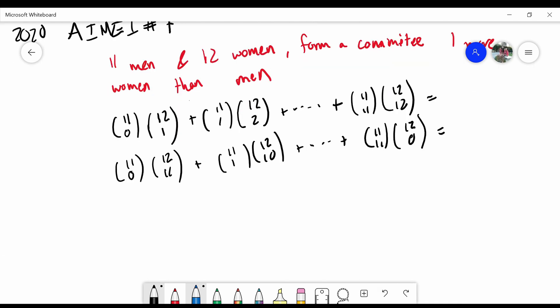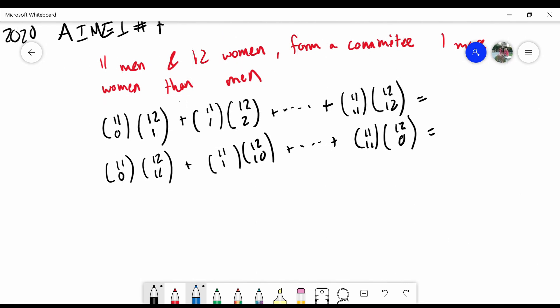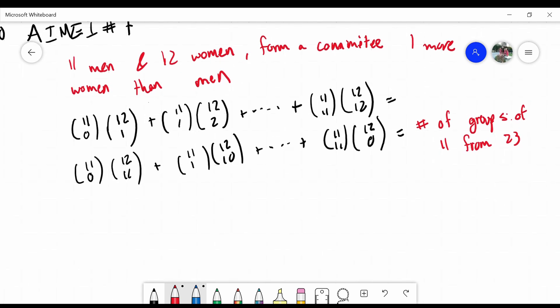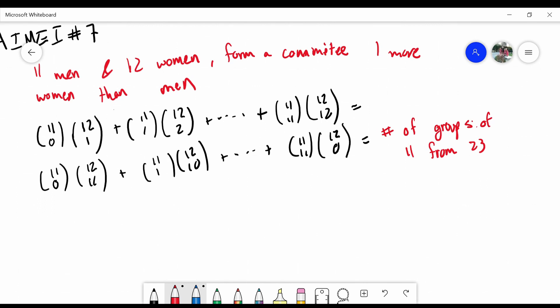This could possibly be viewed as choosing a group of 11 from 23 total people. So this is the number of groups of 11 from 23. Because we go through all the combinations, we could have 0 men and 11 women, we could have 1 man and 10 women, and so on. So indeed, this does give us the number of groups of 11 from 23 total people. Our answer is thus, 23 choose 11.